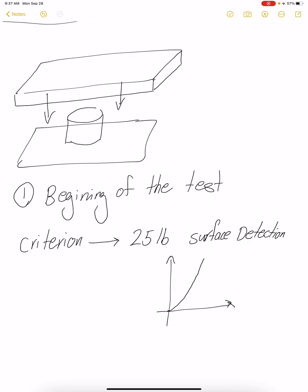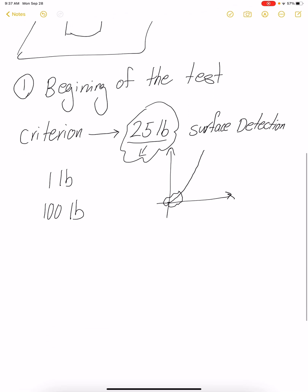But if you have a polymer you might want to use a lower criterion. This force criterion tells us whenever the machine senses 25 pounds that means the surface has been detected and the software starts to record data. If you assign a very low value, let's say one pound, then the machine might detect air friction as the specimen surface and it starts recording data, which would be incorrect. And if you assign 100 pounds, the machine has already applied pressure into the specimen, so we are losing the beginning of our stress-strain curve.